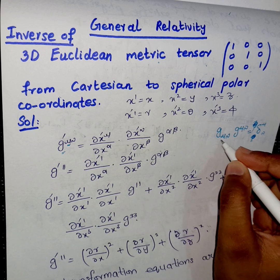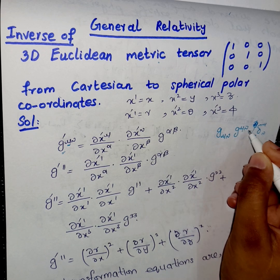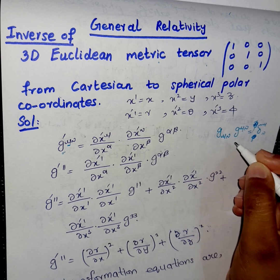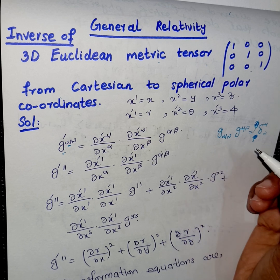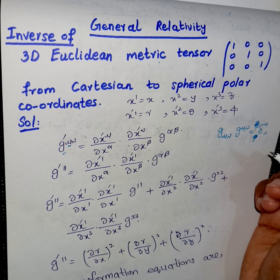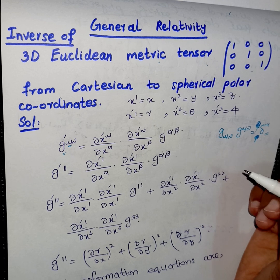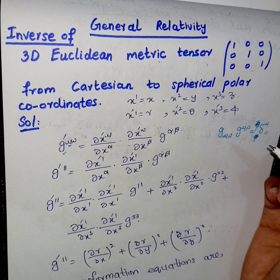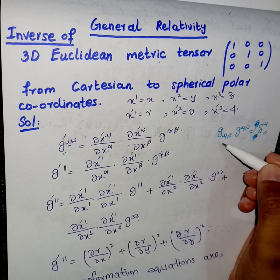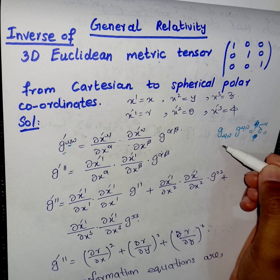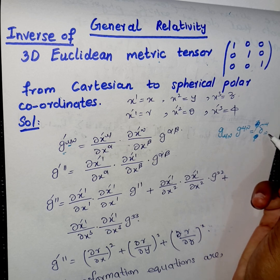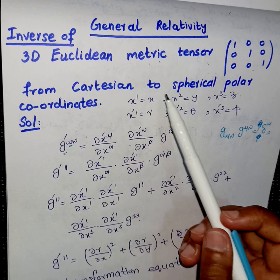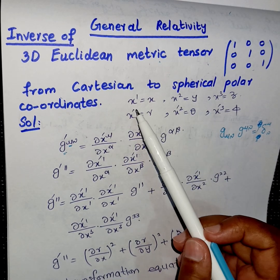The metric tensor is given by g_μν and its inverse is given in contravariant form. If we multiply a matrix with its inverse we get an identity matrix — similarly, if we multiply the metric tensor by its inverse we get δ_μν, the Kronecker delta.